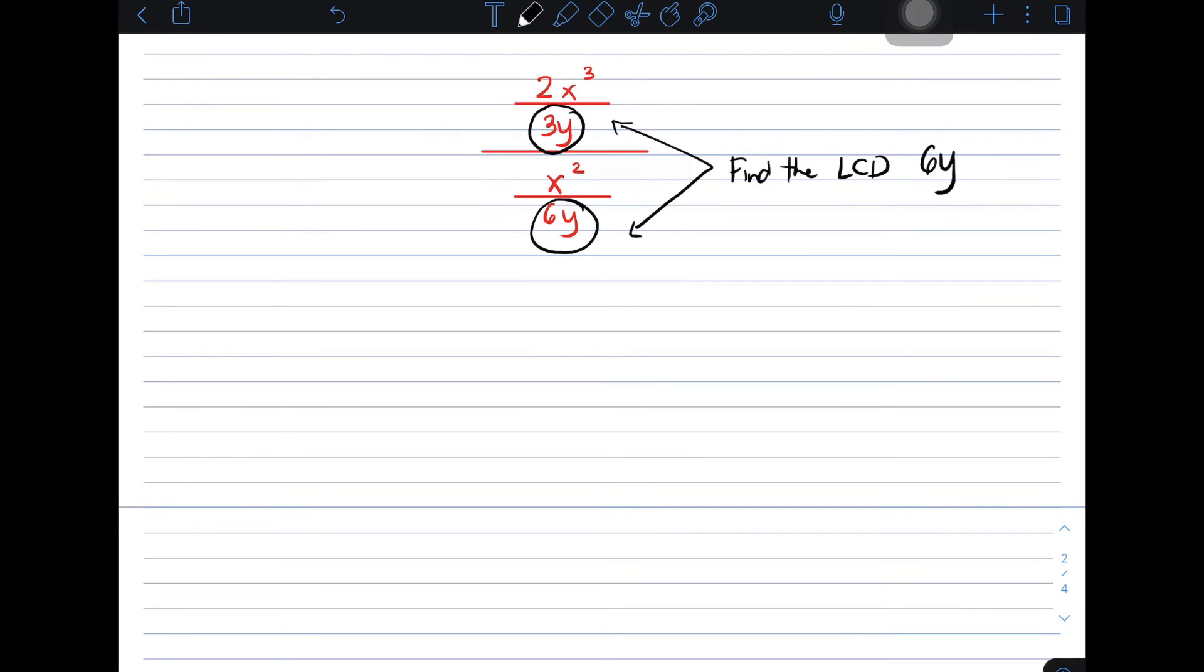Let's move on to this. So, what we will do is we will multiply 2x cubed over 3y all over x squared over 6y. Since we have the LCD which is 6y, we will multiply our numerator by the LCD by the LCD.